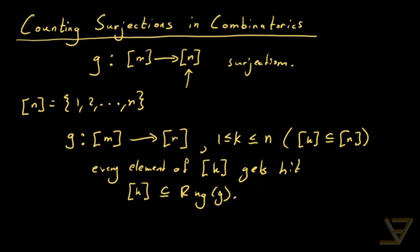So that means this section k is a subset of the range of g. And this is, as you can tell, a bit of a more general situation because for k equals to n, we have surjections.